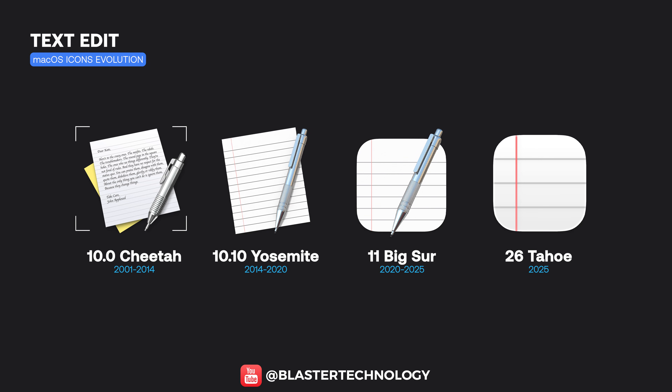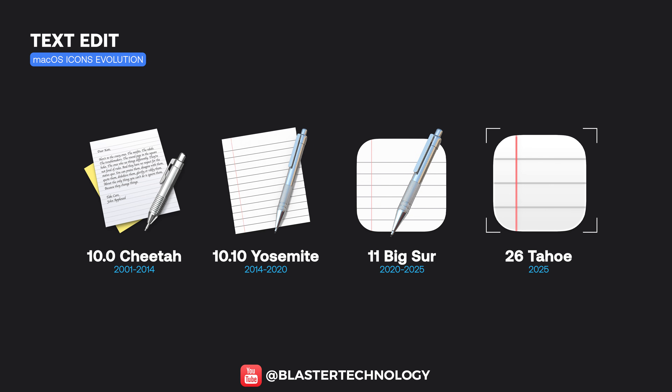The TextEdit icon evolved from two sheets of paper with a realistic pen in early macOS 10 to a single sheet in OS Yosemite. macOS Big Sur reduced it to a minimal symbol, and Tahoe simplified it even further.